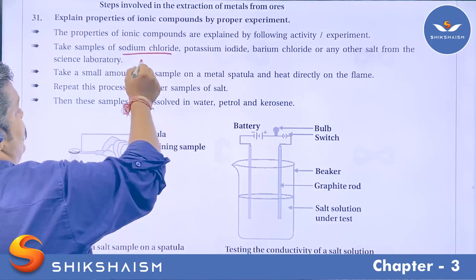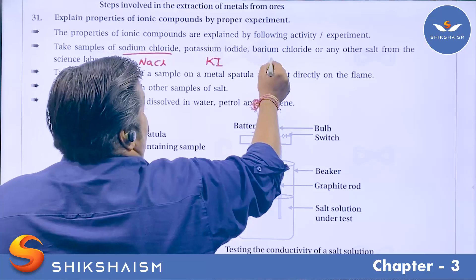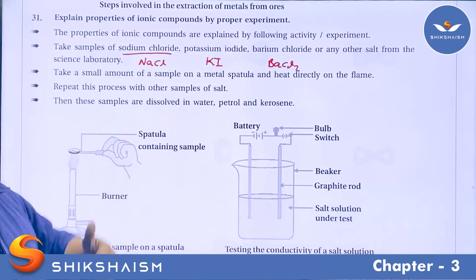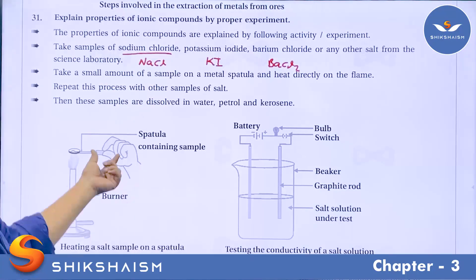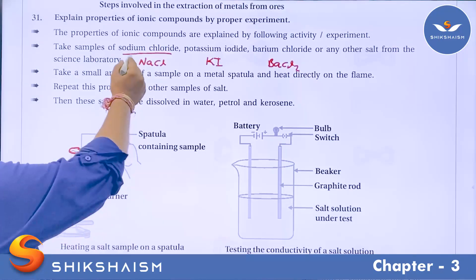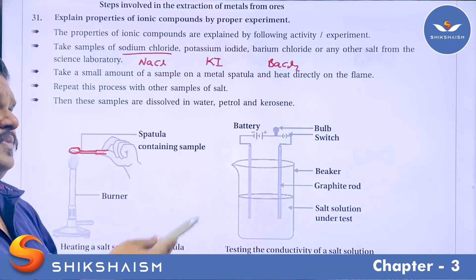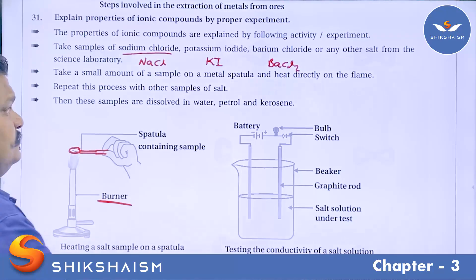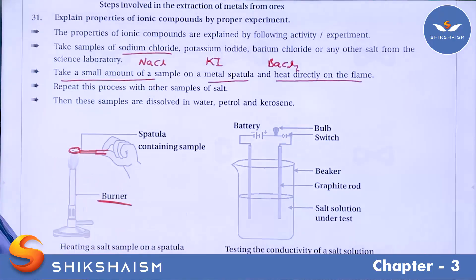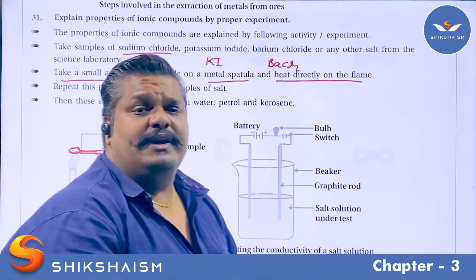Take a sample of sodium chloride — you know that sodium chloride is an ionic compound produced from sodium and chlorine, NaCl. We will also use potassium iodide (KI) and barium chloride (BaCl₂). Take a small amount of each sample on a metal spatula and heat directly on the flame using a burner. Repeat this process with each sample: first NaCl, then KI, then BaCl₂.